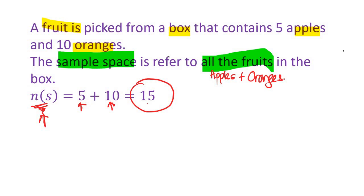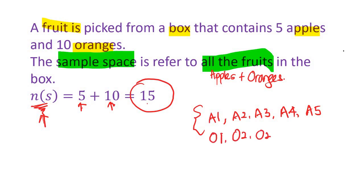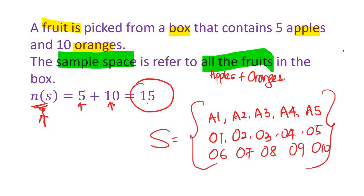For this question, I didn't list out all the sample space, but if you want to list it out, you need to differentiate the 5 apples — write apple 1, apple 2, apple 3, apple 4, apple 5 — because they are all different. Same for the oranges: orange 1, orange 2, and so on. I label them with numbers to differentiate them. This is the sample space — remember, sample space must be written in set notation. Without set notation, you have not answered the question. So that's all for this part.